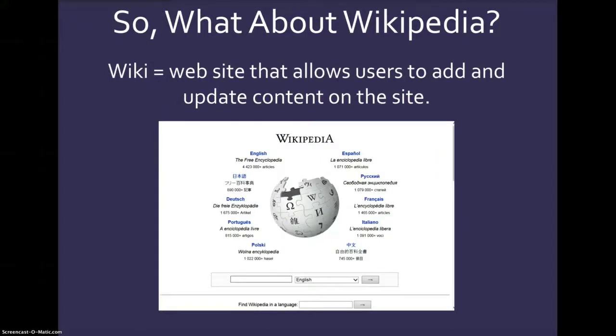What about Wikipedia? First let's define what Wikipedia is. A wiki is a website that allows users to add and update content on that site. That's both the big strength and the big weakness of Wikipedia.